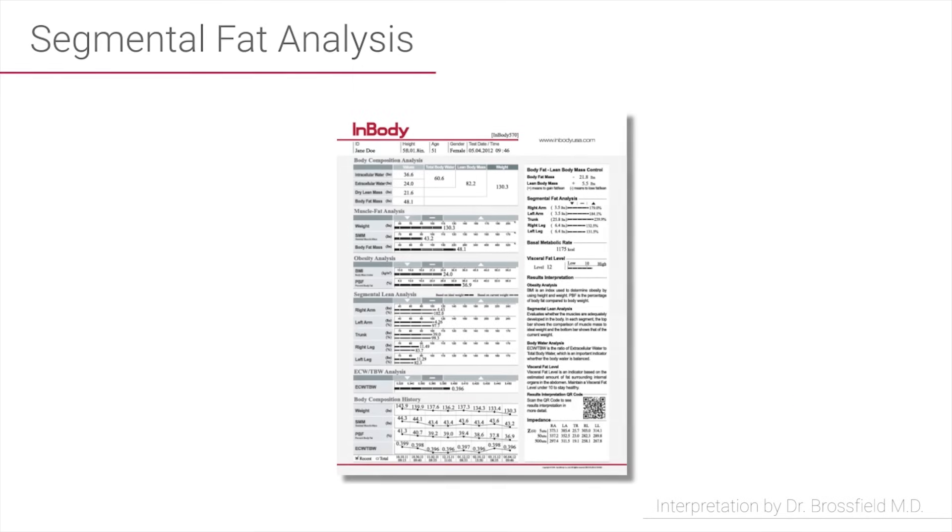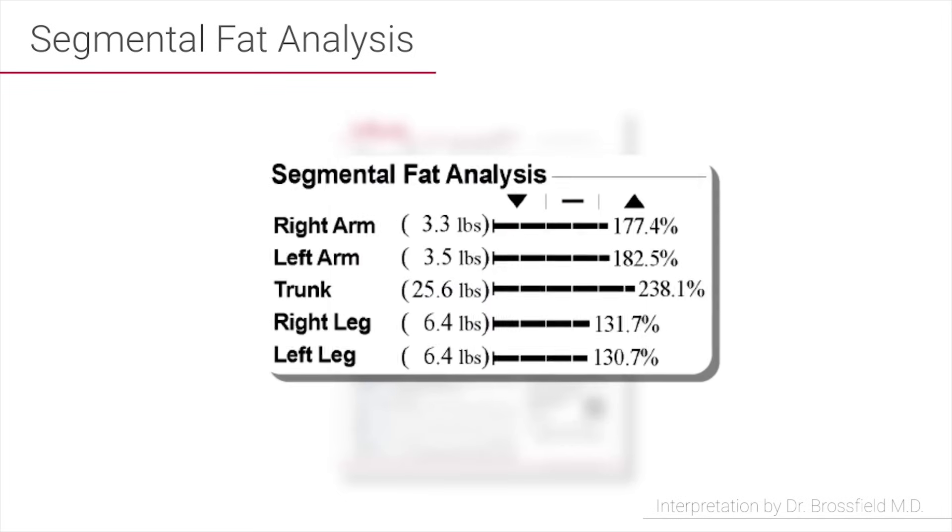I'm going to move to the top right of your results sheet. This segment called segmental fat analysis is a description of how much fat is being stored in each segment of your body, so you can look at your right arm, your left arm, your trunk, and then your legs and see where fat is deposited. Most of us carry more fat in our trunk than in our limbs, and so you'll be able to see that by noticing that the bar for trunk moves a little further to the right than probably your upper body or arms or your lower body or legs.